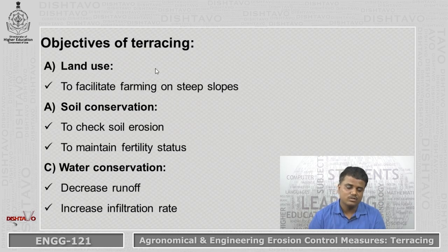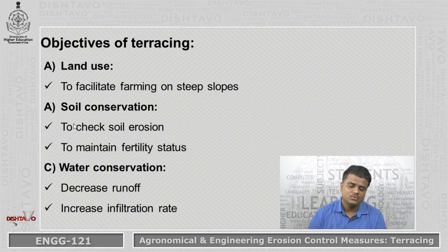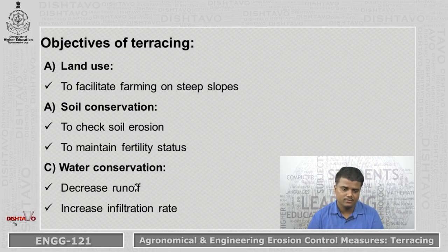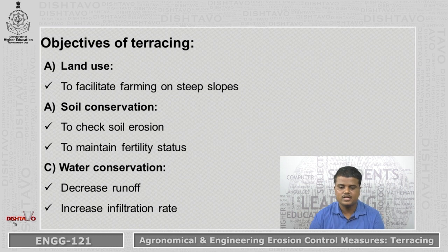The objectives of terracing: based on land use, to facilitate farming on very steep slopes is possible. For soil conservation, to check soil erosion and to maintain the fertility status of the soil — or nutrient conservation. Next is water conservation: to decrease runoff and increase infiltration rate of the water.